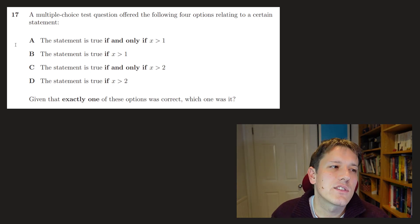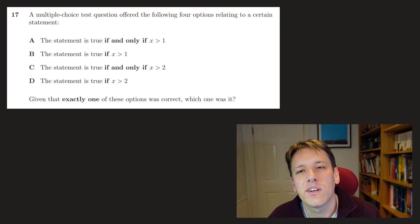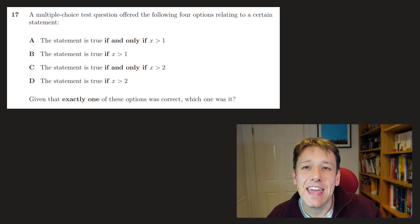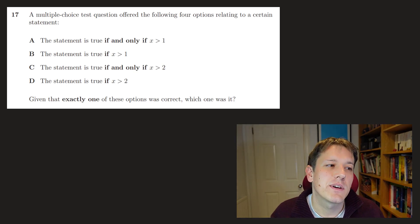Right, so let's think about this. Let's just start with statements a and b. So it says, is it true if and only if x is bigger than 1, or if x is bigger than 1? a has two things. It has to be true if x is bigger than 1, and also only if it's bigger than 1. Right, so if a holds, then b necessarily holds, because it's a weaker statement. So we must have that a implies b.